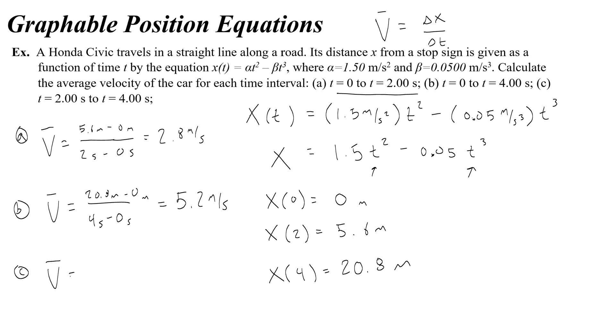And the average velocity from the interval of 2 to 4 seconds. I would do 4 seconds minus 2 seconds. Hopefully you see that's a change in time of 2 seconds, not 6. And then I would do 20.8 meters minus 5.6 meters. And that's going to give me 7.6 meters per second.